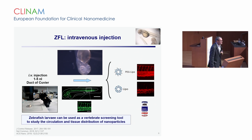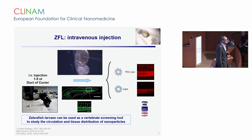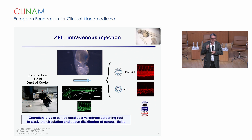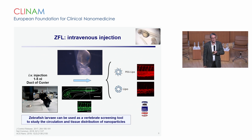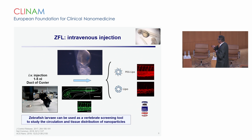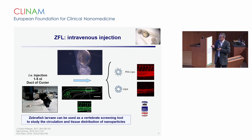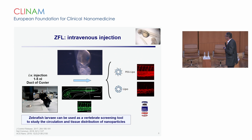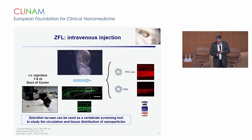We are interested in performing pharmacokinetic experiments with these small organisms. Therefore, it is mandatory to have techniques to inject defined doses of test compounds intravenously. Our test compounds are fluorescent-labeled nanoparticles. We use micromanipulators and a very fine glass capillary, which is inserted in the duct of Cuvier, to directly inject these small particles intravenously. Subsequently, we can use confocal microscopy technologies to study the circulation and tissue distribution of the injected nanoparticles.